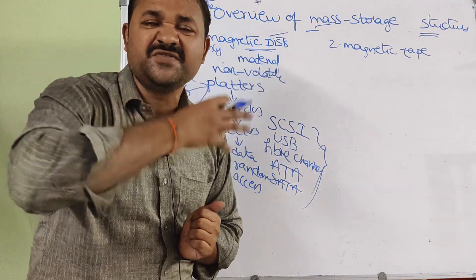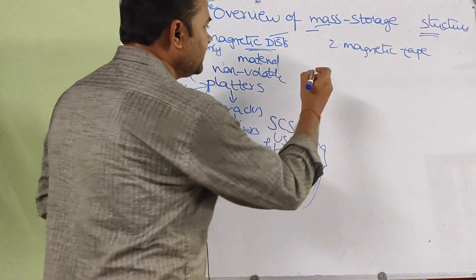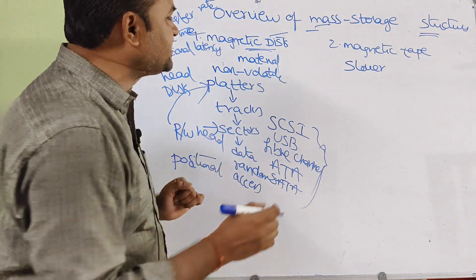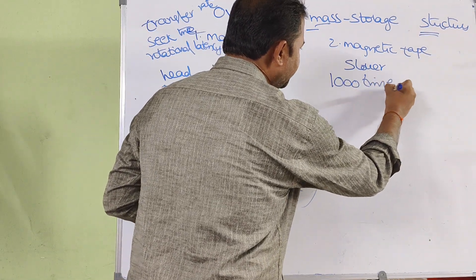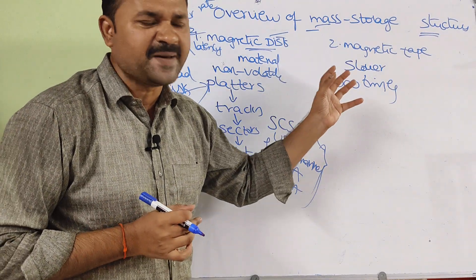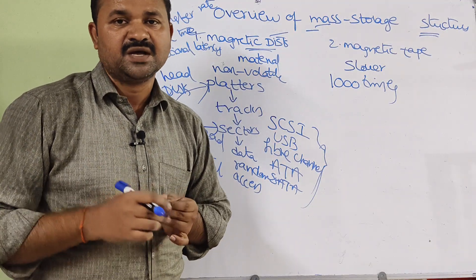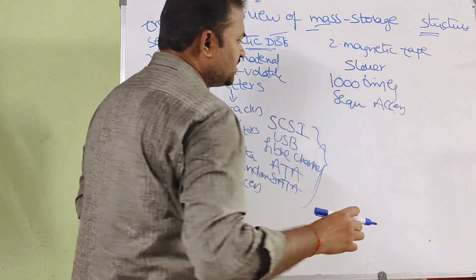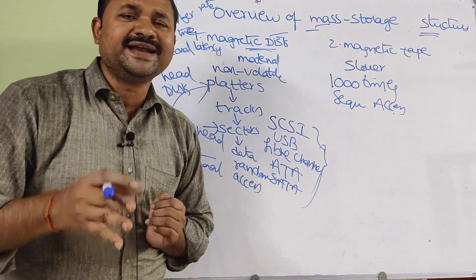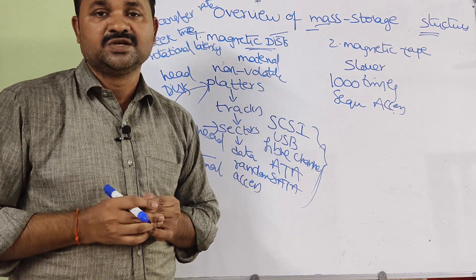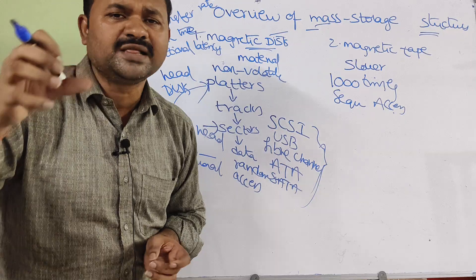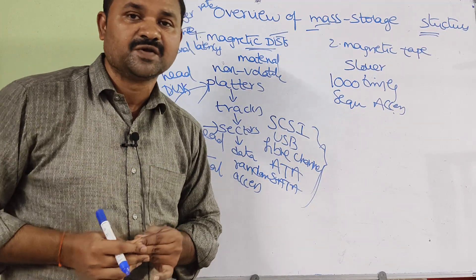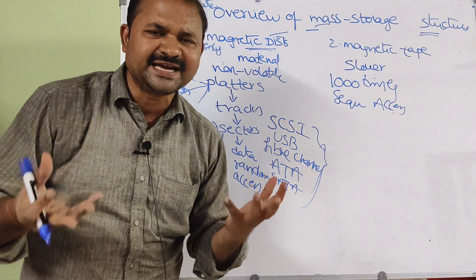The major difference between magnetic disk and magnetic tape is that magnetic disk access time is very fast, whereas magnetic tape access time is very slow — about 1000 times slower than a magnetic disk. Magnetic tape mainly provides sequential access. If we have 10 records, all 10 records are accessed one by one sequentially. To access the 10th record, we must access all records before it. In contrast, magnetic disk provides random access — we can move the read/write head to any desired location directly.